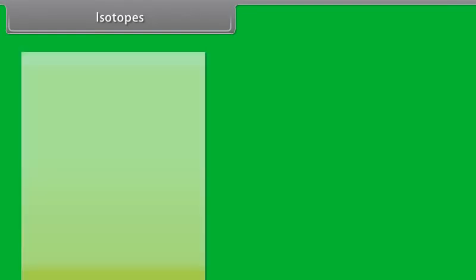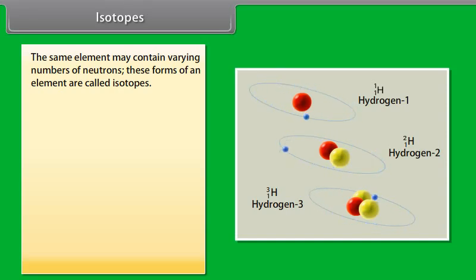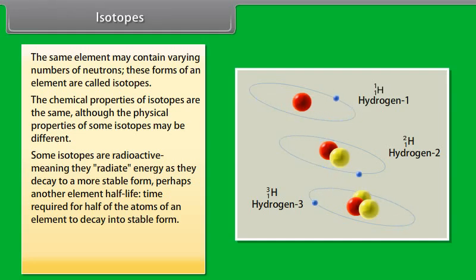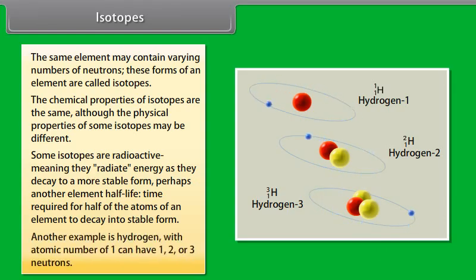Isotopes. The same element may contain varying numbers of neutrons. These forms of an element are called isotopes. The chemical properties of isotopes are the same, although the physical properties of some isotopes may be different. Some isotopes are radioactive, meaning they radiate energy as they decay to a more stable form, perhaps another element half-life. Time required for half of the atoms of an element to decay into stable form. Another example is hydrogen with atomic number of 1 can have 1, 2 or 3 neutrons.